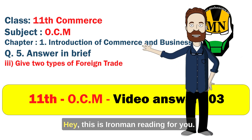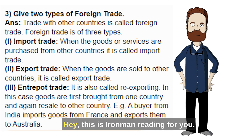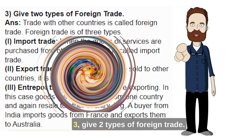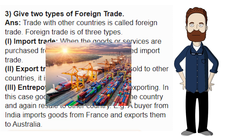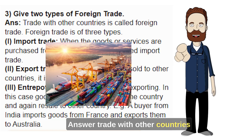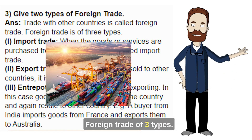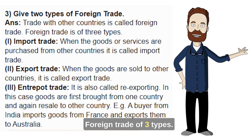Hey, this is Iron Man reading for you. Question 3: Give two types of foreign trade. Answer: Trade with other countries is called foreign trade. Foreign trade is of three types.